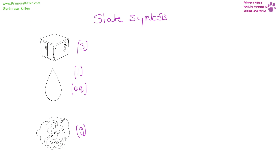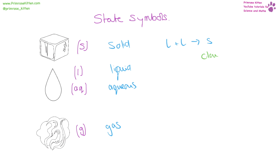State symbols tell us what state something is in. S is solid, L is liquid, AQ is aqueous, and G is gas. If you see state symbols in an equation, the answer generally refers to them. If you see something that is liquid and liquid or aqueous and aqueous going to a solid, it is going to turn cloudy. If a gas is produced from a liquid and solid or liquid and liquid, you are going to see bubbles or fizzing.